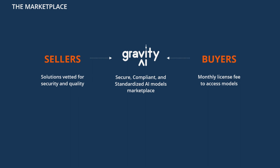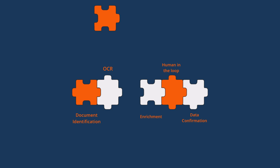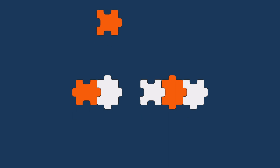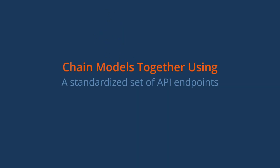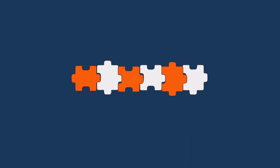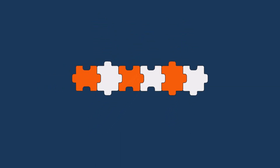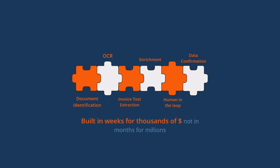We vet each model for security and standardize them for simple low-code implementation. You can download just the one model you need — for example, a model that extracts text from invoices — and integrate it into your existing pipeline. Or, because Gravity AI standardizes the integration of its models, you can build an entire pipeline getting you up and running in weeks, not months.